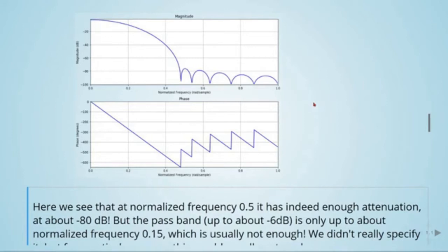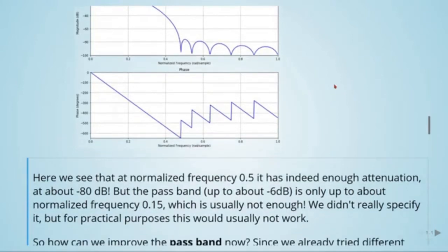We see that at normalized frequency 0.5 it has indeed enough fast attenuation at about minus 80 dB. But the pass band, up to about minus 6 dB, is only up to about normalized frequency 0.15, which is usually not enough. We didn't really specify it, but for practical reasons this would usually not work.